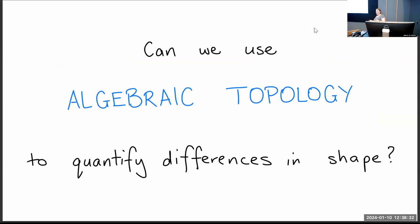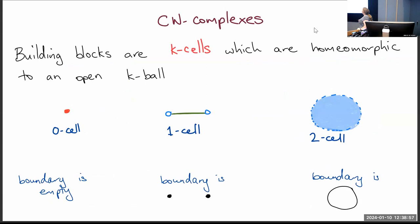Since I'm in algebraic topology, the question is: I've got this hammer, how do I use it? Can I use topological invariants — topological measurements — to quantify differences in shape? The building blocks for calculating topological measurements are k-cells, which are like little patches of k-dimensional space. We'll focus on zero, one, and two cells.